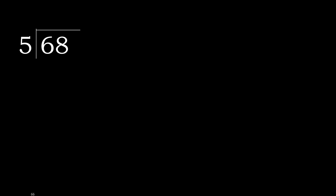68 divided by 5. 6 is not less, so we work with 6. 5 multiplied by which number is nearest to 6 but not greater? 5 multiplied by 2 is 10 — 10 is greater. 5 multiplied by 1 is 5. 6 minus 5 is 1.